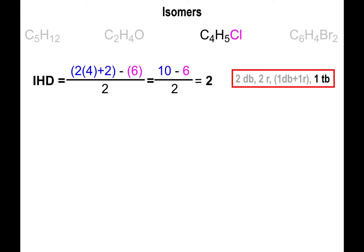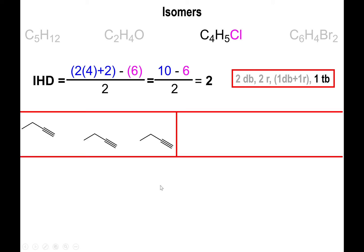Starting with the triple bond option: draw four carbons in a row, then introduce a triple bond at one end. With the four carbons drawn, you just need to place the chlorine. You can place it at the end where the triple bond terminates, or on the carbon that doesn't already have four bonds further along the chain, or at the very far end. All three of these molecules are different from each other.